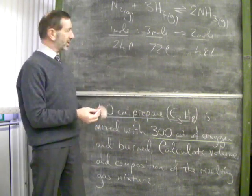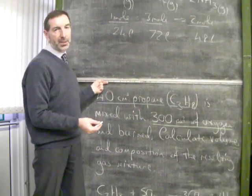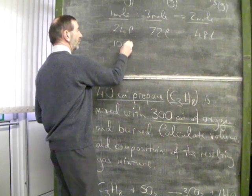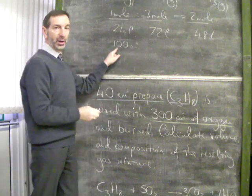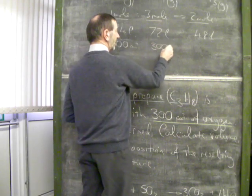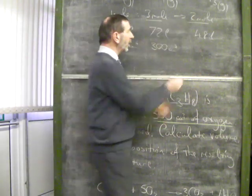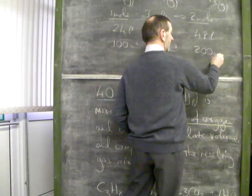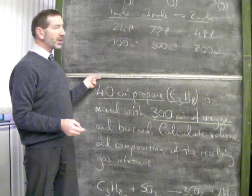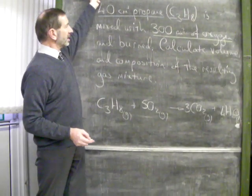Now, you wouldn't normally deal with such large volumes, so let's scale this down. Let's suppose we had, say, 100 cubic centimetres of nitrogen. In that case, that would react with 300 cubic centimetres of hydrogen, producing — following the one to three to two ratio — 200 cubic centimetres of ammonia. Using this simple relationship, we can do gas-gas calculations.